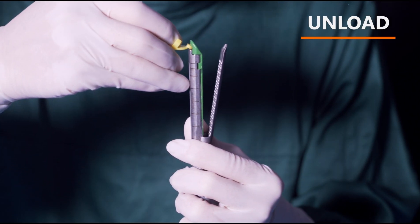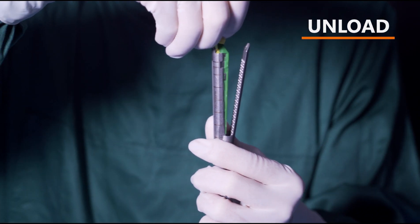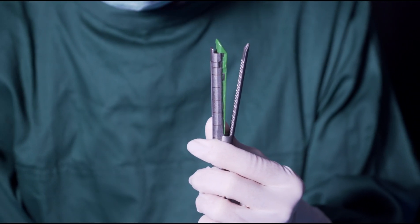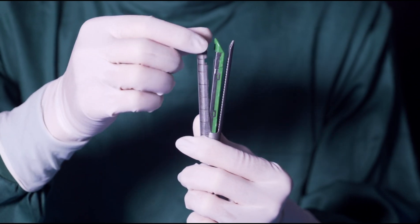Insert the forceps or pointed tool into the gap between the reload and the cartridge and pry the reload until it is separated from the stapler.